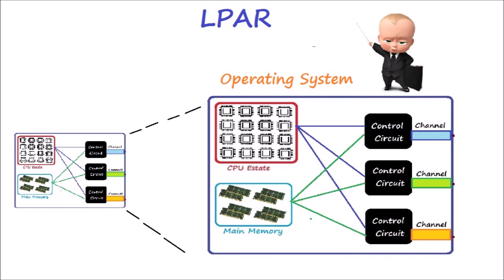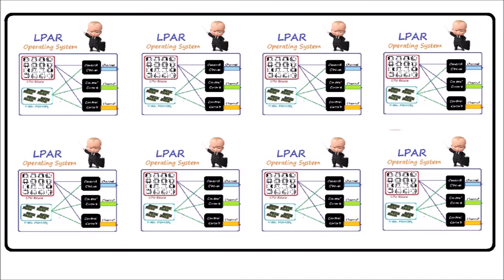The wonderful thing is within a single mainframe hardware box you can have multiple such independent LPARs running in parallel, each with its own copy of operating system. Now if we are to redraw that figure again, here's a big box that's the mainframe hardware. Within it we have multiple small boxes called LPARs, each one with its own operating system, CPU, memory, I/O channels and control circuits.